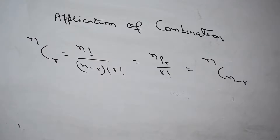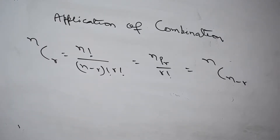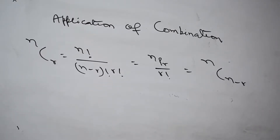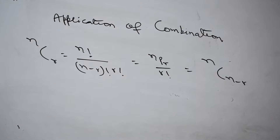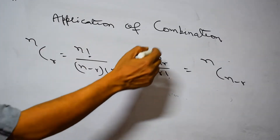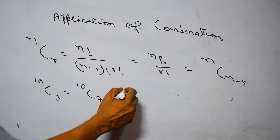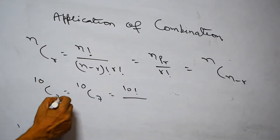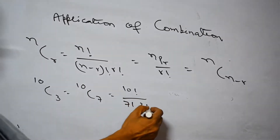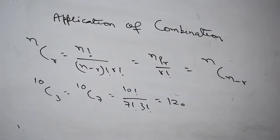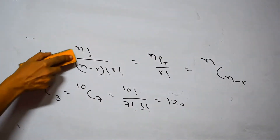Today we will be discussing applications of combination. It is calculated using the notation NCR, which can be expressed as factorial n divided by (n minus r) factorial and r factorial. This relates to NPR as NPR divided by factorial r. A key property is that NCR is equal to NC(n minus r). For example, 10C3 equals 10C7, both giving 120.